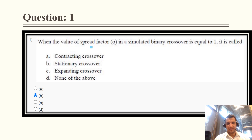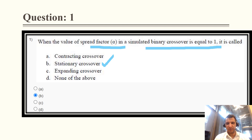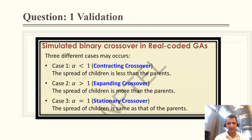Question 1: When the value of spread factor alpha in a simulated binary crossover is equal to 1, it is called stationary crossover. The value of alpha could be less than 1, greater than 1, or equal to 1. When alpha is less than 1, it is contracting crossover; when alpha is greater than 1, it is expanding crossover; and when alpha equals 1, it is stationary crossover.